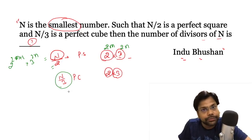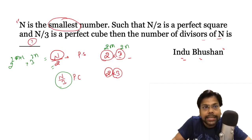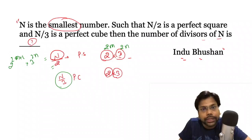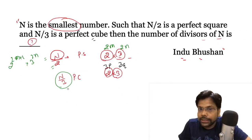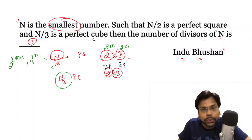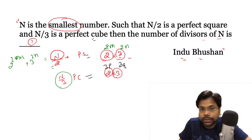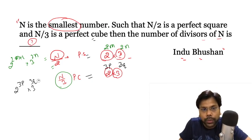What happens when n is divided by 3? When n is divided by 3 it is a perfect cube. The meaning of a perfect cube is the power must be a multiple of 3 — say 3p and 3q. So if n is not yet divided by 3, we get n equal to 2^(3p) × 3^(3q+1).